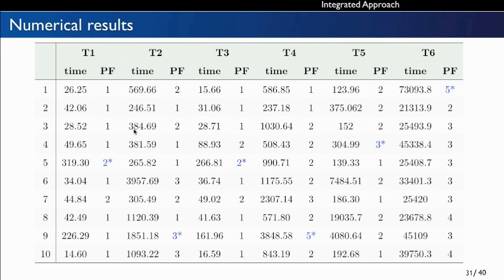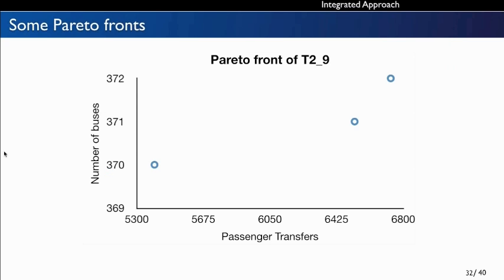Here is the table of numerical results. One column shows the computational time and another shows the number of solutions in the Pareto front. The table shows that there are cases where the optimal value of both the timetabling and vehicle scheduling problems can be achieved simultaneously — these are the cases with a one in the corresponding column, indicating no conflict between the two objective functions. Other instances where the conflict is more evident are highlighted in blue.